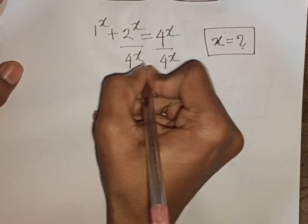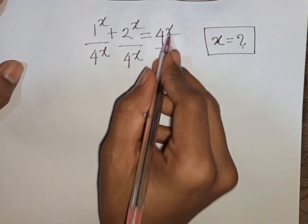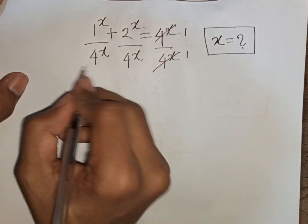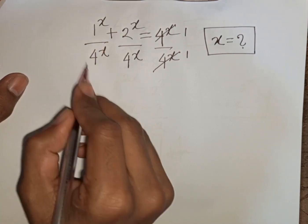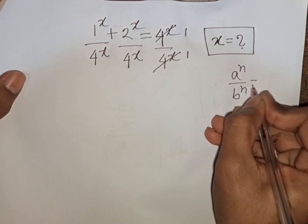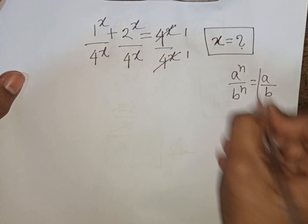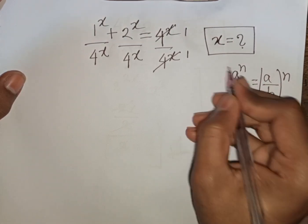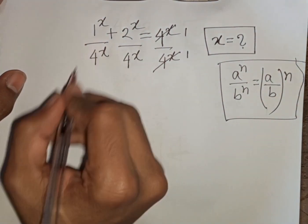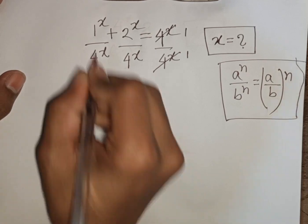After dividing by 4^x on both sides, the 4^x terms cancel. We now see terms with the same power X but different bases. Remember the exponential rule: a^n · b^n = (a·b)^n. According to this formula, we can write (1/4)^x combined with a common power X.